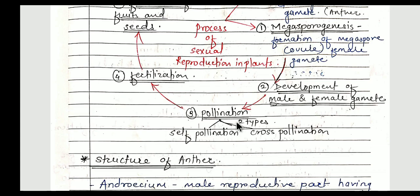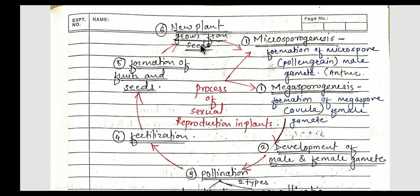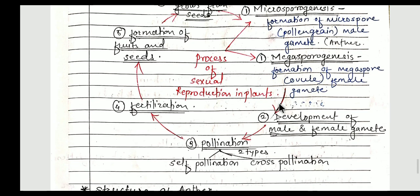Cross-pollination takes place when male and female flowers are different — for example, papaya has separate male and female flowers, so cross-pollination takes place with the help of vectors like insects or wind. The fourth process is fertilization — the fusion of male and female gametes. When male and female gametes fuse together they form a seed, which is the zygote or the new young one, and when planted in the soil it produces a new plant. This is how sexual reproduction takes place in plants.